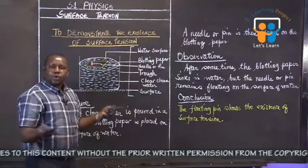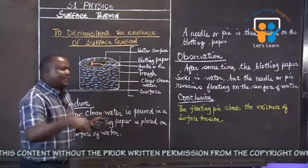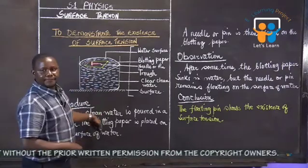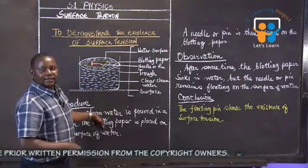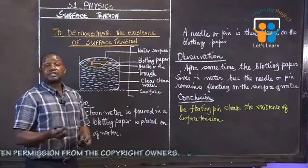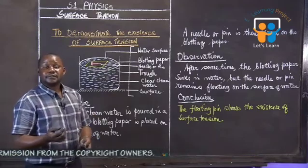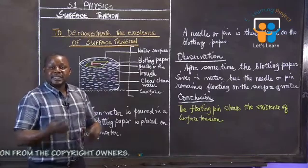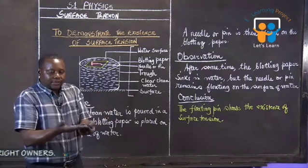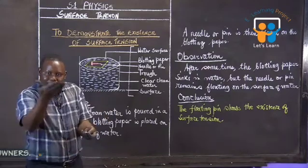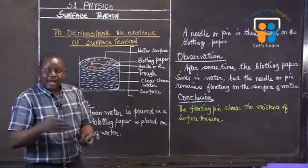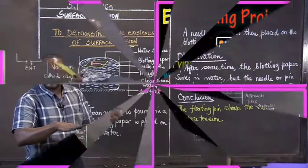Now someone was asking, why is it that the blotting paper will sink? Obviously, a piece of paper absorbs water. When you place a piece of paper on water, it will become very, very wet.